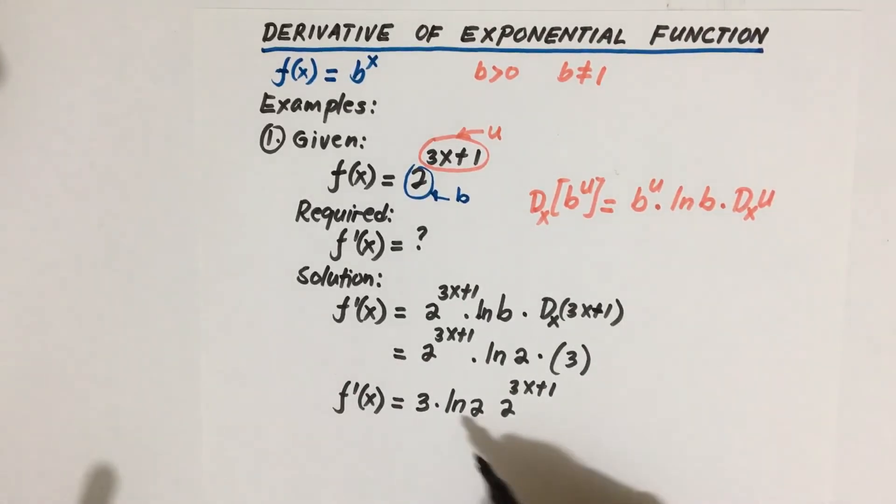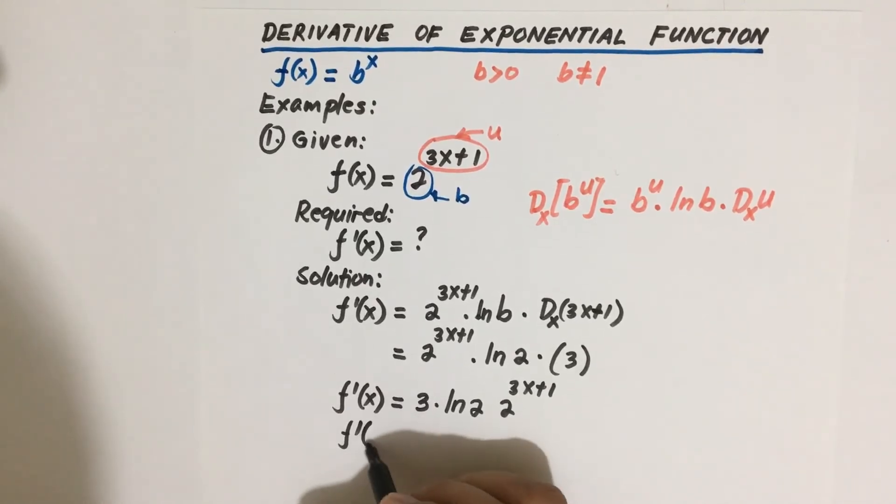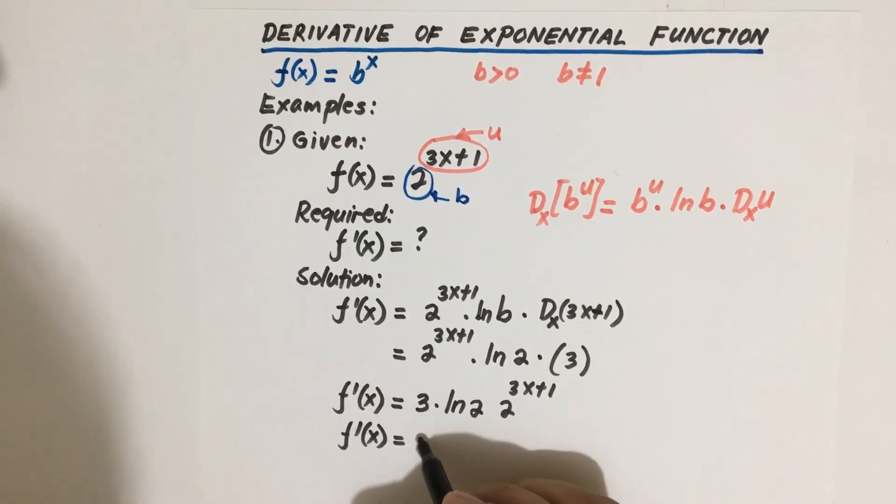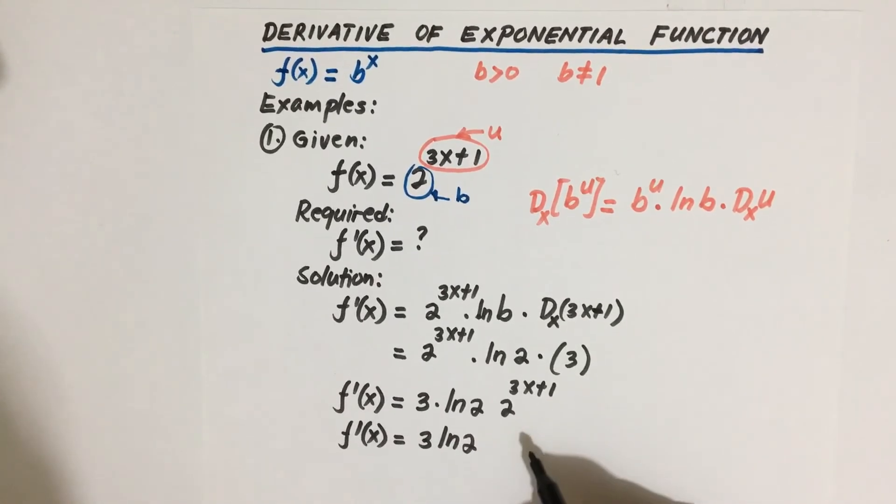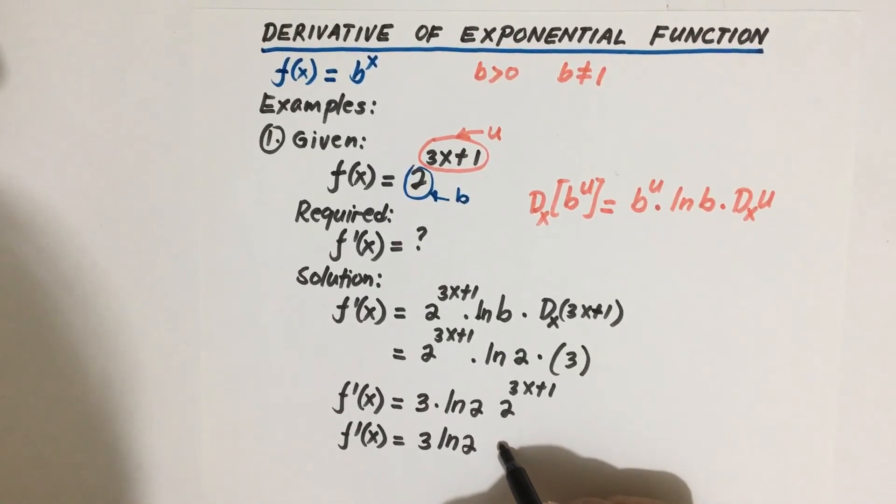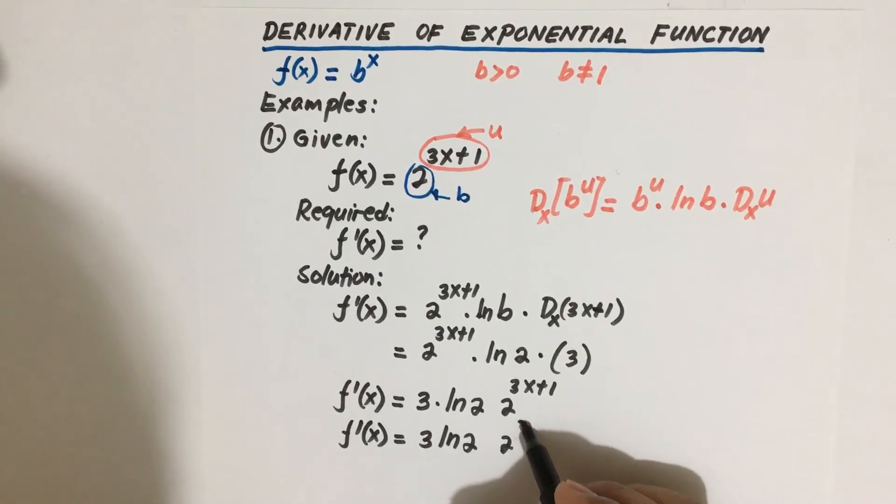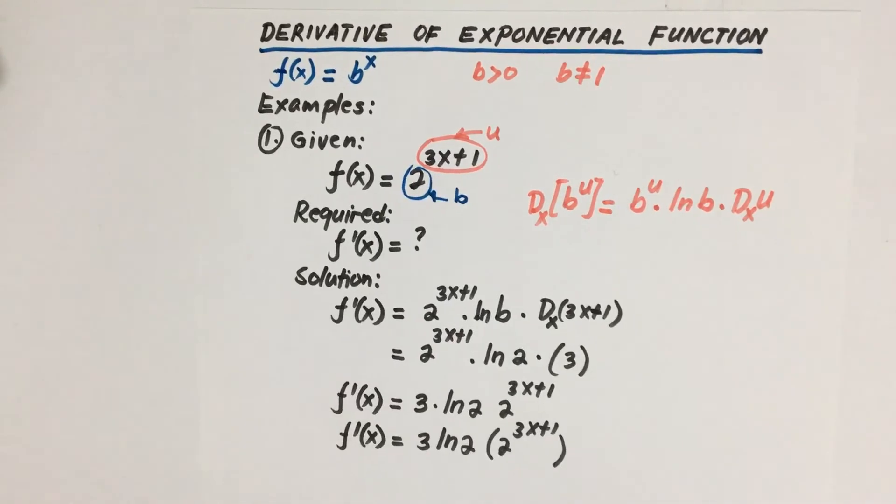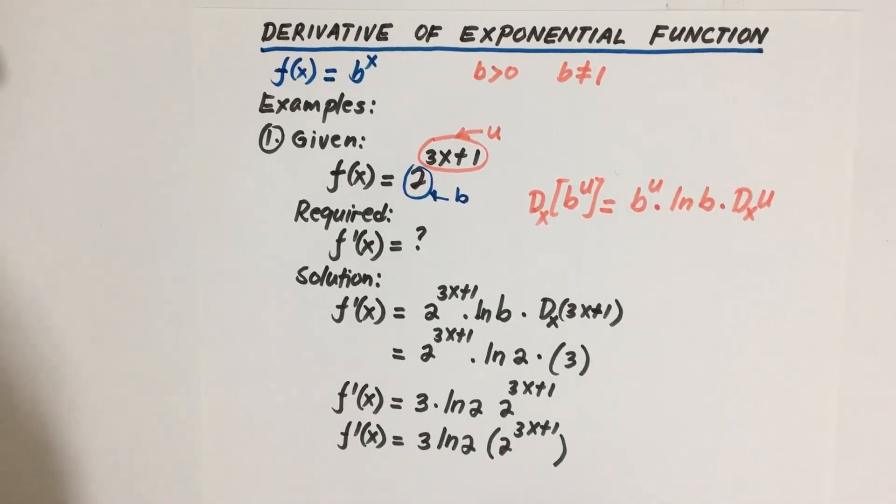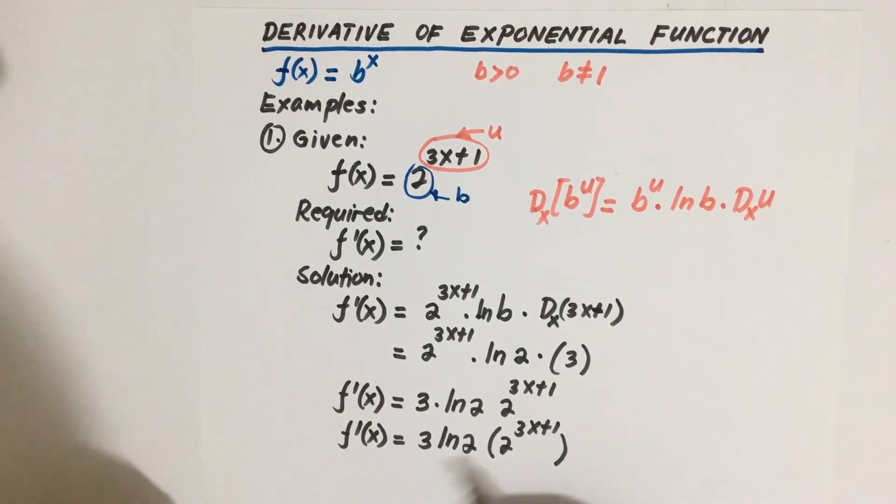So this is our answer, or you can rewrite this as f prime of x equal to 3 ln 2 times 2 to the 3x plus 1. So you can put this inside the parenthesis. This means some multiplication. So this is our answer.